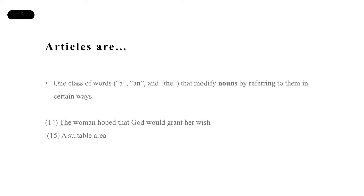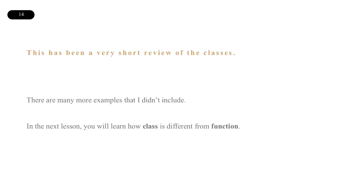Articles are just one class of words that modify nouns by referring to them in certain ways. I'm not going to go into this just now because it's pretty complicated, but basically there are three articles in English: a, an, and the. So this has been a very short review of the classes. There are many more examples I didn't include. In the next lesson, you will learn how class is different from function.